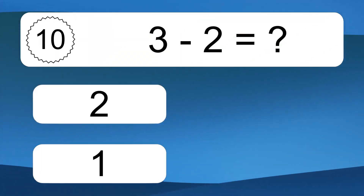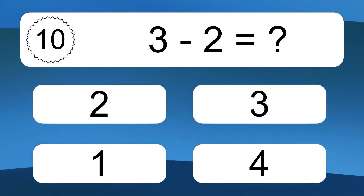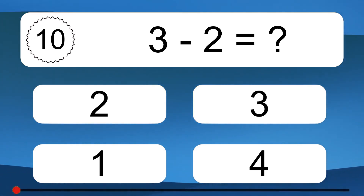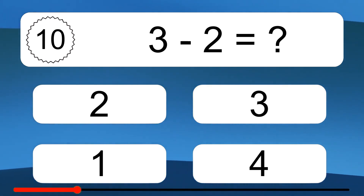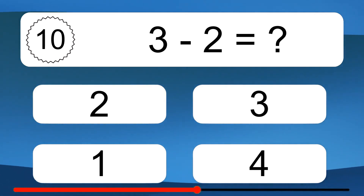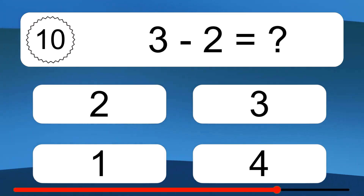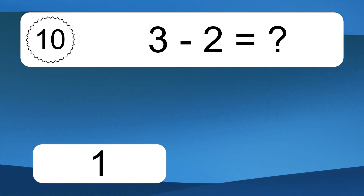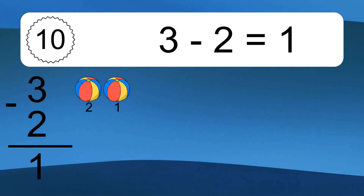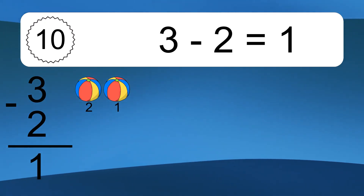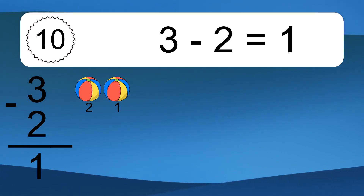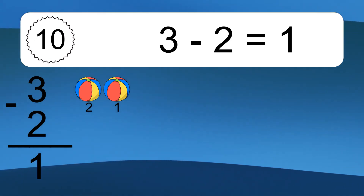3 minus 2 equals what? 3 minus 2 equals 1. Let's count it: 2, 1.